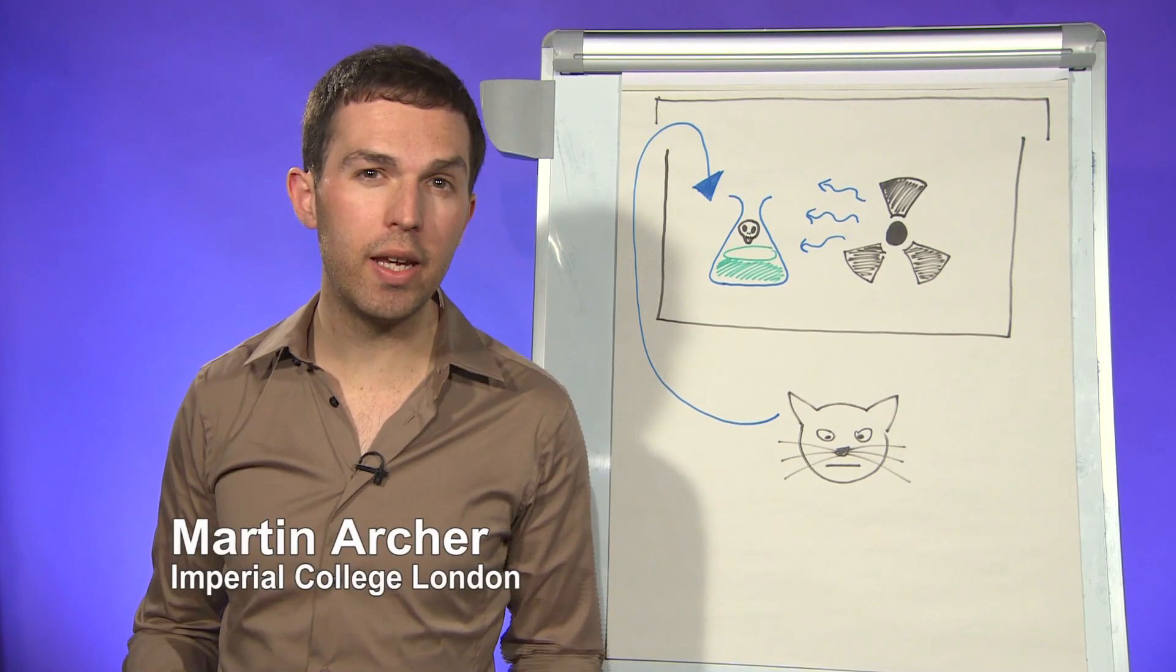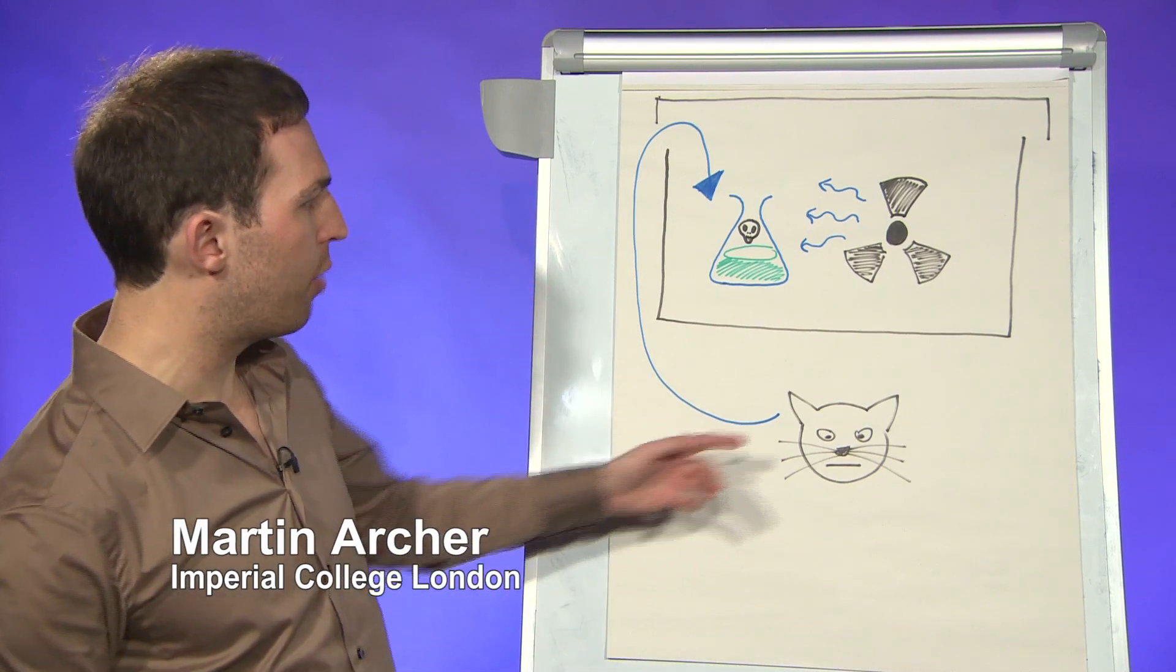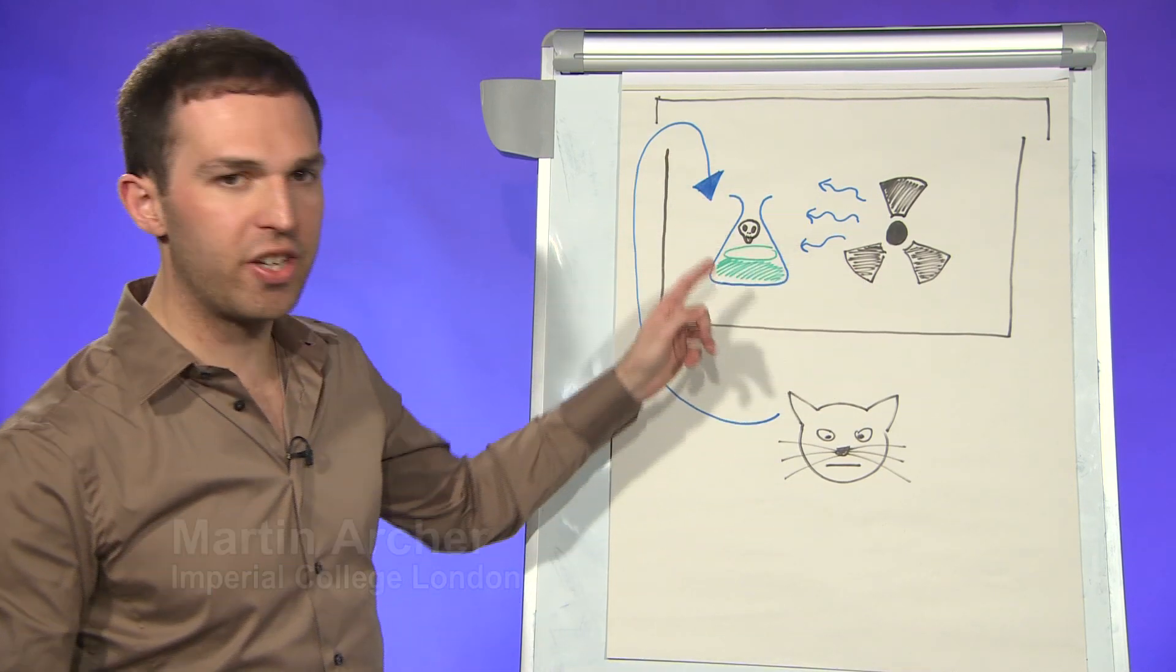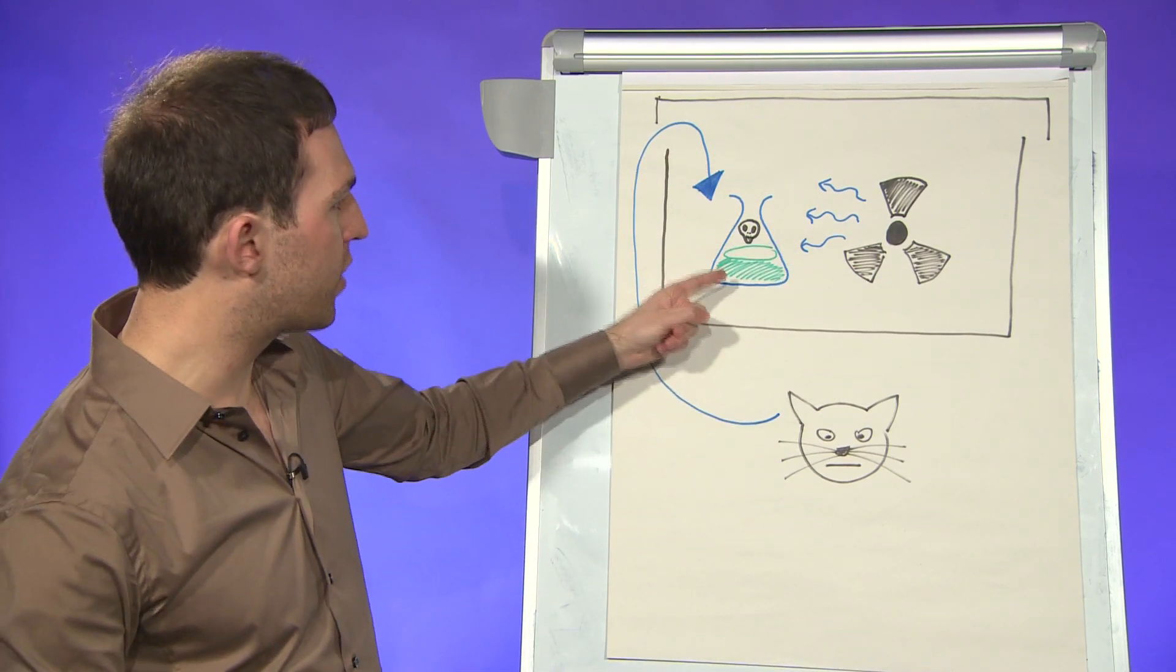Schrödinger's cat is a thought experiment and it goes like this. If I take a box and in it I put a radioactive source which is somehow linked to a flask of poison.